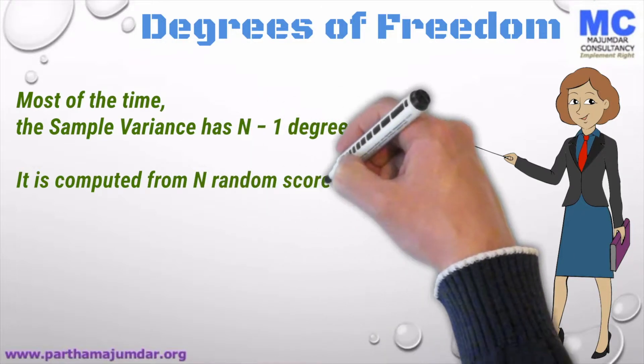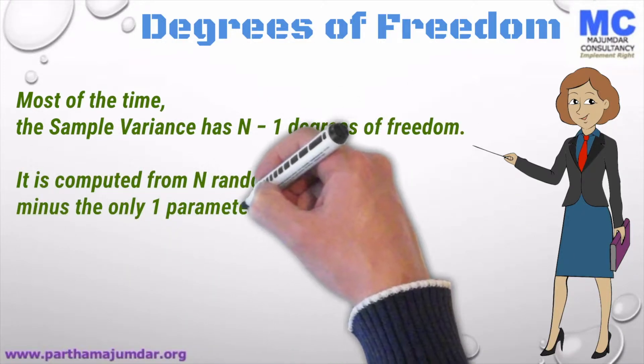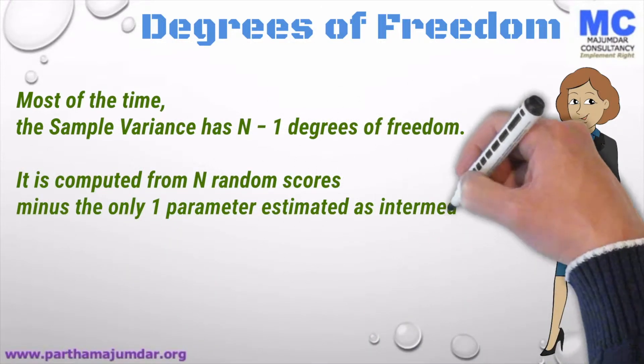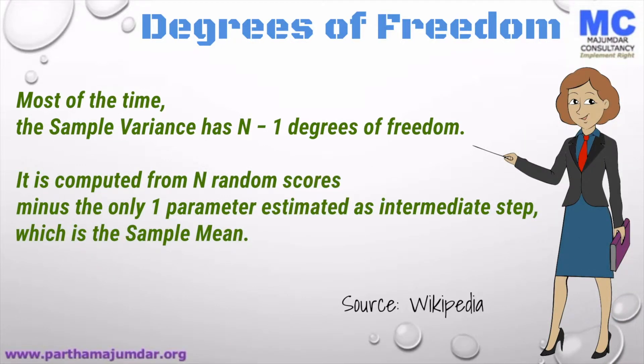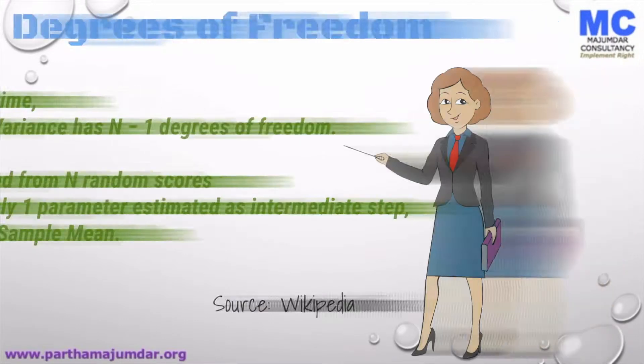Most of the time, the sample variance has n minus 1 degrees of freedom. It is computed from n random scores minus 1 parameter estimated as an intermediate step, which is the sample mean.